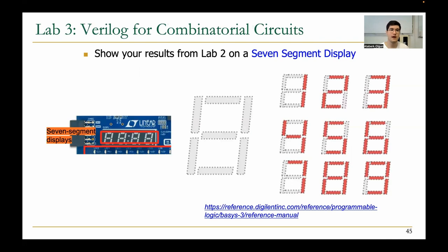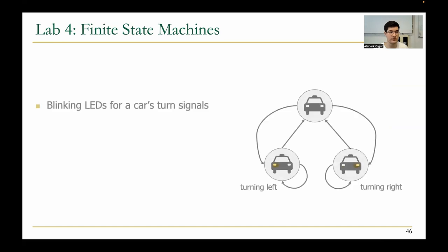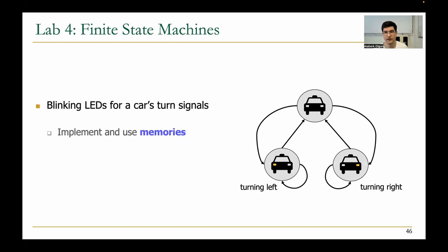In the third lab, you will show your results from lab 2 on the seven-segment display instead of the LEDs. In lab 4, we will implement our first sequential circuit. You will implement blinking LEDs for a car's turn signals, and here you will use memories for the first time. You will also change the blinking speed of the LEDs.